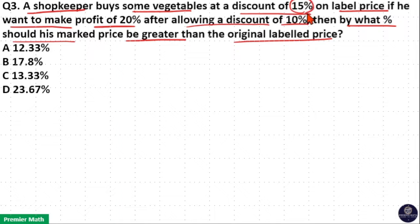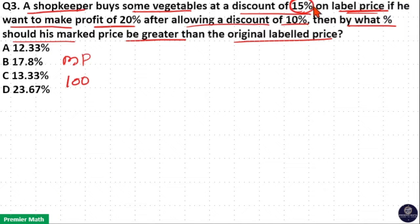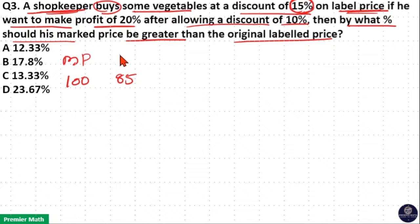Here, discount is 15% and this 15% is on the label price. Label price means MRP or marked price. So if I consider marked price as 100 rupees for this vegetable, then he is getting a 15% discount — that means 100 minus 15 equals 85 rupees. So the shopkeeper is buying this product at 85 rupees, which means this is the cost price for the shopkeeper.